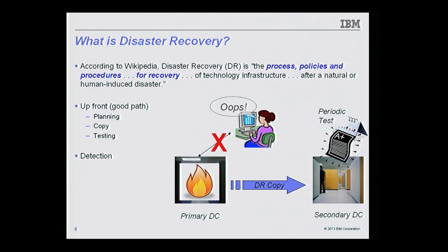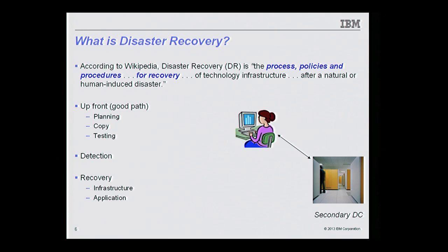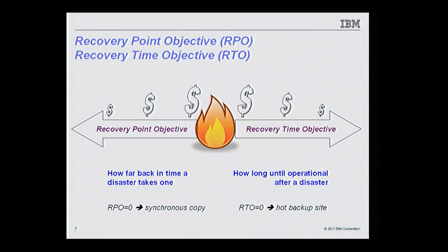There's also detection — I need to figure out a disaster is occurring and respond, otherwise I can't proceed to recovery. Recovery involves recovering the infrastructure and the application. At my recovery site — the secondary data center now becoming production — I need all necessary infrastructure operational. Depending on the solution, I may have that infrastructure running all the time, or I may need to acquire new servers, new storage, bring the infrastructure up, and then get applications running.